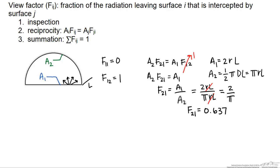One thing to recognize here is that F two two does not equal zero. By the summation rule, F two two equals one minus 0.637, or 0.363.